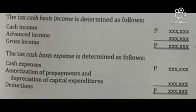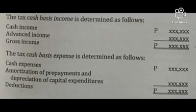Under the cash basis, income is determined as follows: cash income plus advanced income equals gross income. Total deductions under cash basis are computed as cash expenses plus the amortization of prepayments and depreciation of capital expenditures.